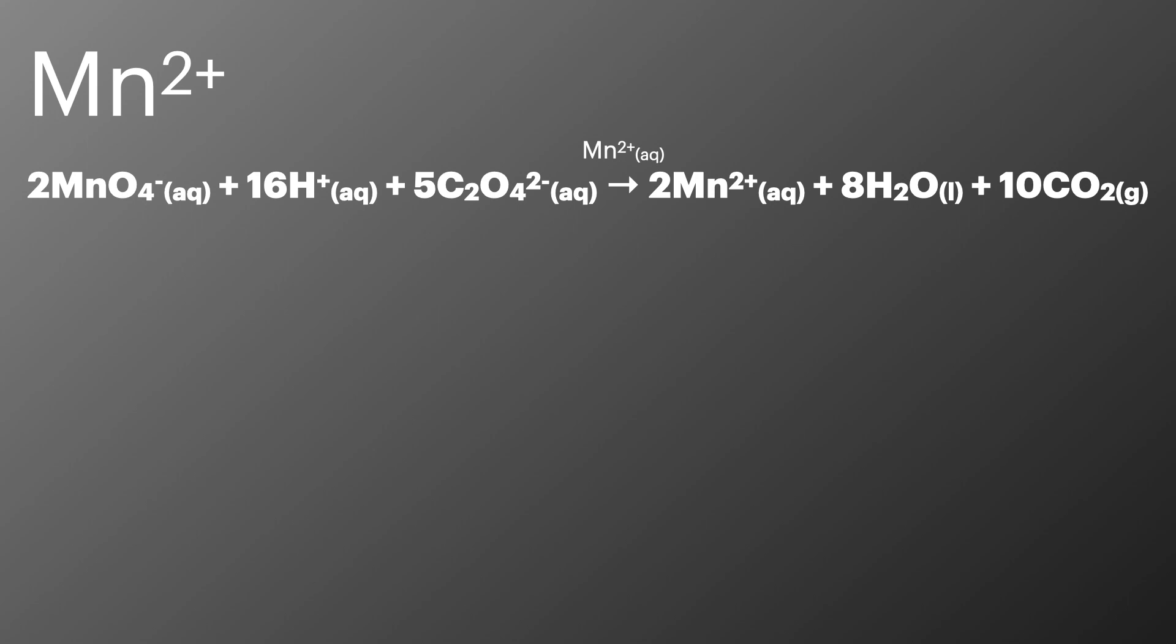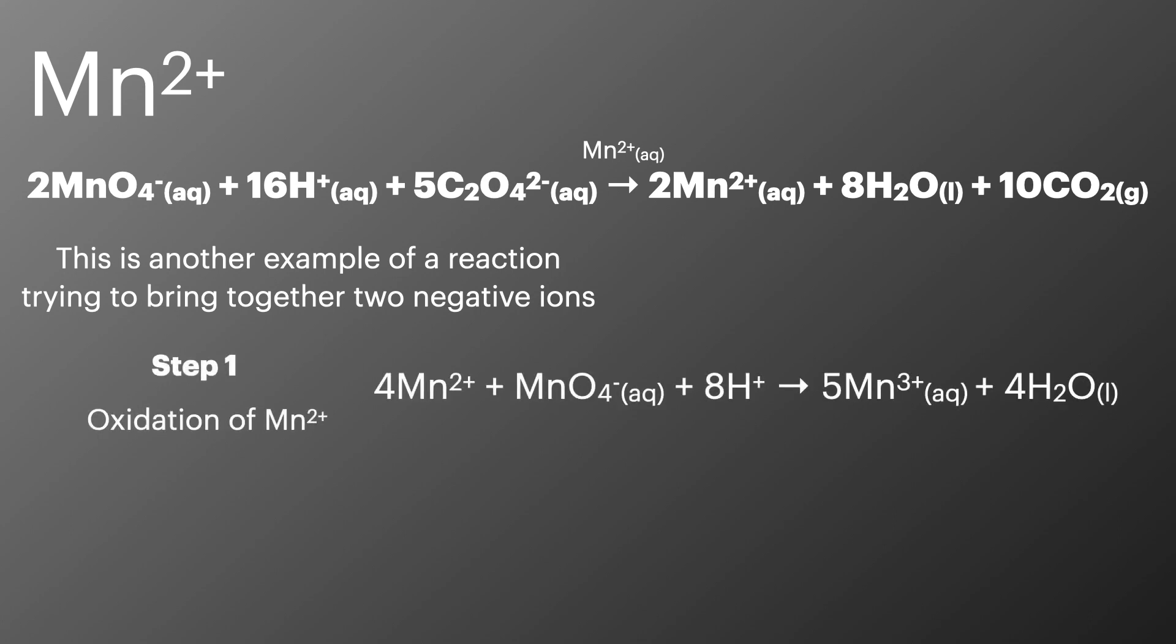Mn2+ ions catalyse this rather complicated looking reaction between MnO4- and C2O4 2-. This is another example of a reaction bringing together two negative ions. In step 1 the Mn2+ reacts with MnO4- to form water. Again we can see the change in oxidation states of the catalyst.